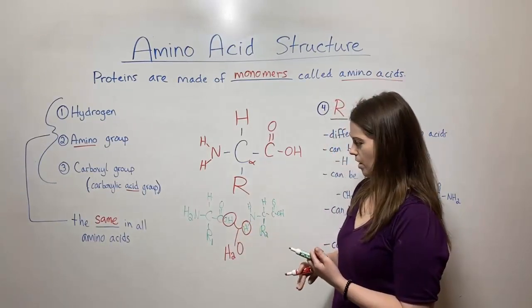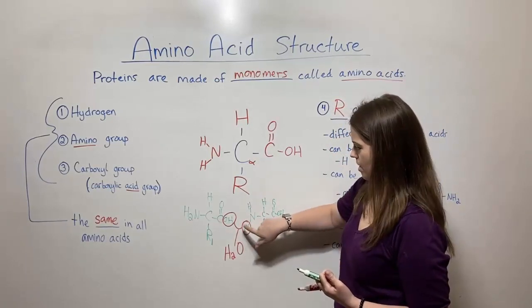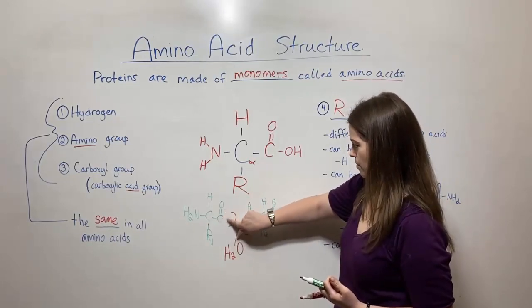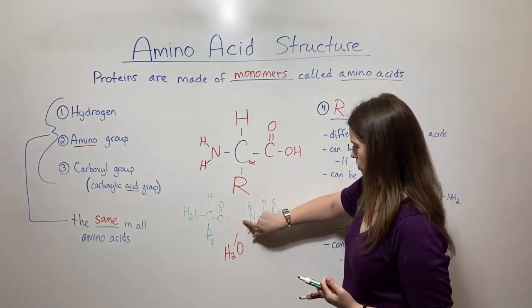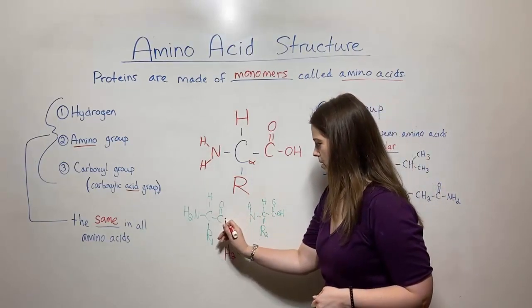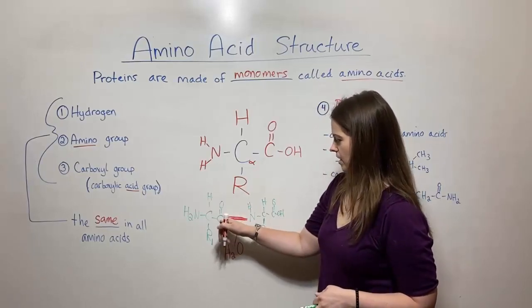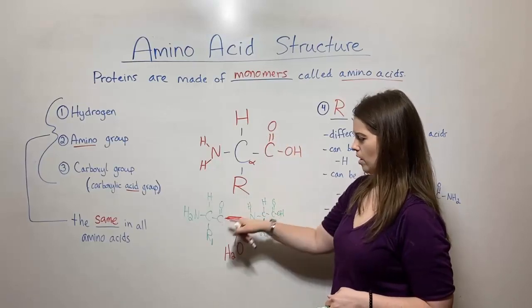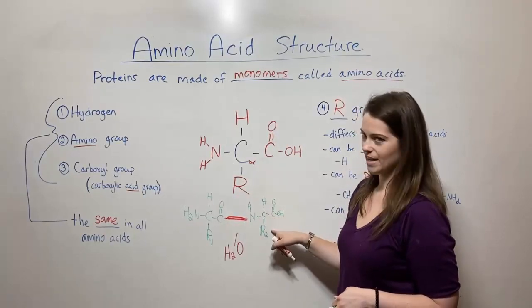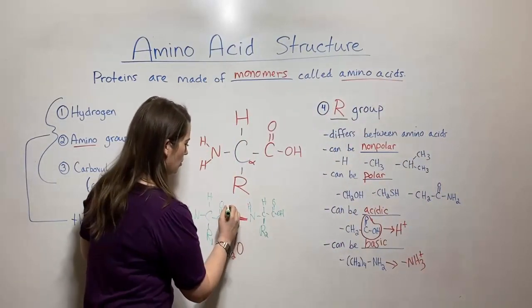These two things join together to form water. And so water is a product of this reaction. So now we've got this H and this OH and they've joined together to make water. I'm going to remove them here. And then a peptide bond forms right here between the carbon of the carboxyl group of the first amino acid and the nitrogen of the amino acid. And this right here is called a peptide bond.